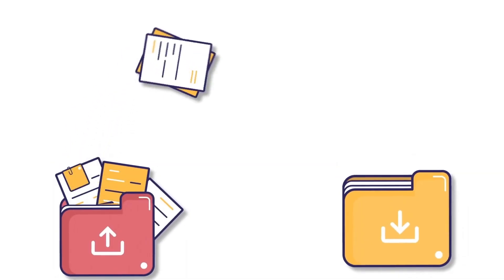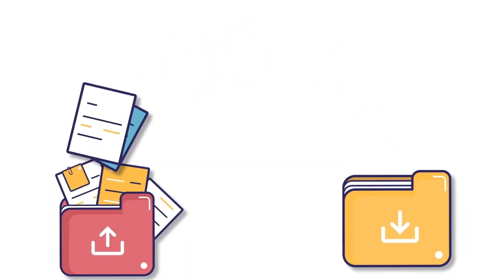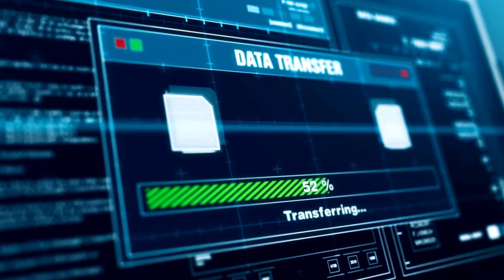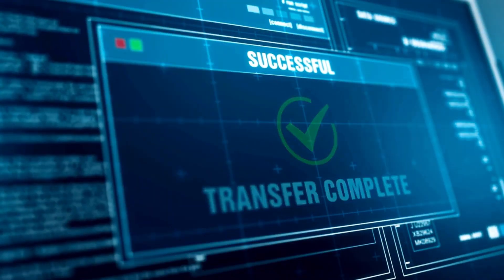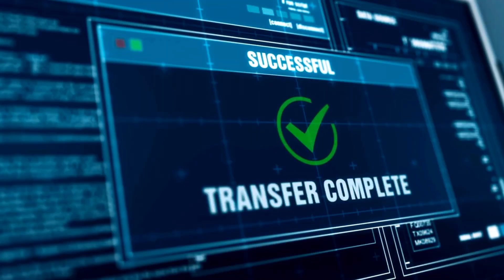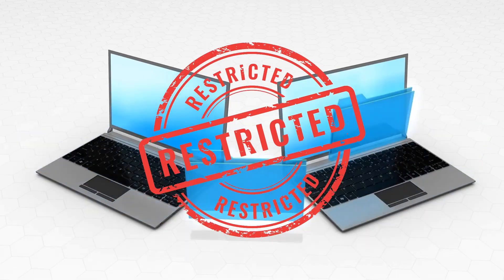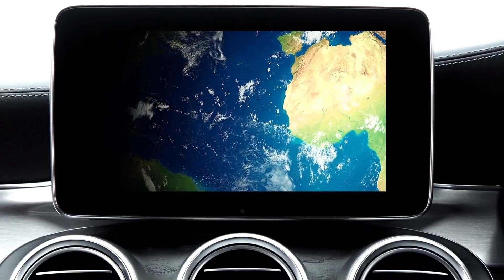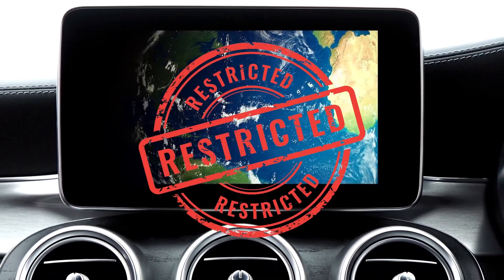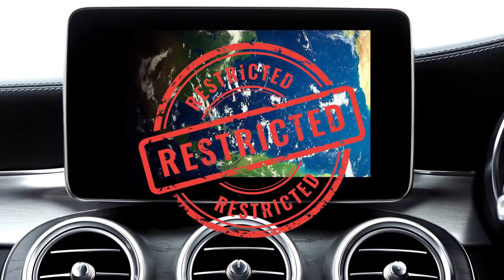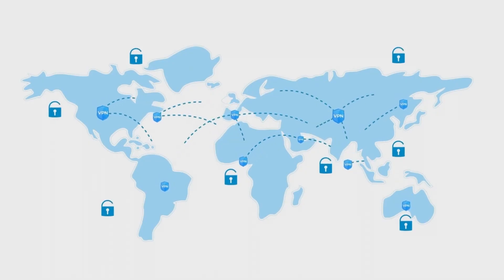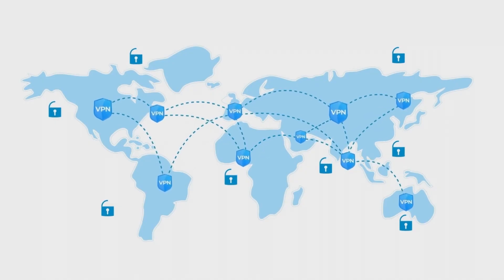Another benefit is that a VPN allows access to internet content that might be restricted in certain geographical locations. For example, some content, such as videos on YouTube or Netflix, may only be accessible in certain countries and restricted in others. Websites can determine your country based on your IP address. If you're in a restricted country, you won't be able to access certain content. By using a VPN, you can choose VPN servers located in different countries, changing your IP address and effectively changing your location, allowing access to restricted content. For example, if you're in South America and want to access content available only in the U.S., you can use a VPN and choose a server in the U.S.